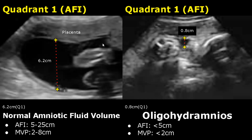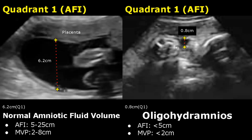This is quadrant 1. The deepest pocket measures 6.2 cm in quadrant 1 for normal fluid. In the Oligohydramnios case, there is a small area of fluid — the quadrant 1 measurement is only 0.8 cm.